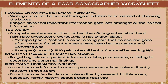Another element of a poor worksheet is being too wordy. Don't use complete sentences — use sonographer shorthand. For example, a poor way to write symptoms would be: 'A patient is experiencing pain that comes and goes after he eats for about six weeks, and he has been having nausea and vomiting.' The correct shorthand is: 'RUQ pain intermittent x6 weeks after eating, nausea, vomiting.' The second example is concise and gets the point across in the minimum number of words.